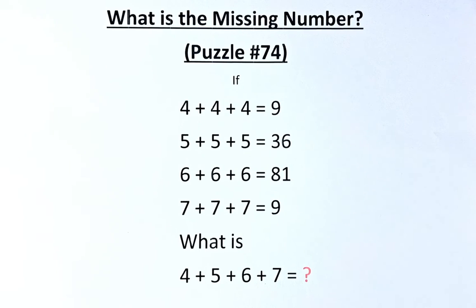If 4 plus 4 plus 4 equals 9, 5 plus 5 plus 5 equals 36, 6 plus 6 plus 6 equals 81, and 7 plus 7 plus 7 is equal to 9.